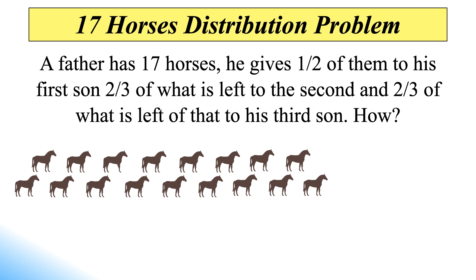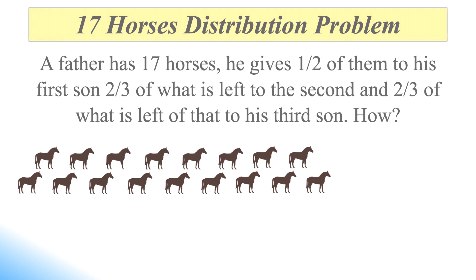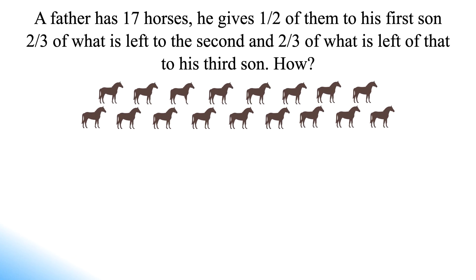As of course, you cannot divide 17 horses evenly by 2. Additionally, it becomes clear that after the horses are distributed, there will be some amount of horses left over, as the third brother only receives two-thirds of the horses left. So we must think carefully about the right way to solve this puzzle.